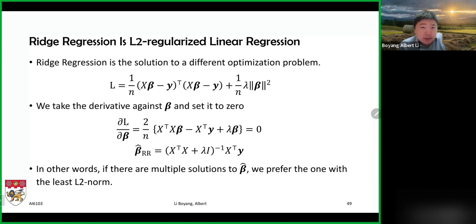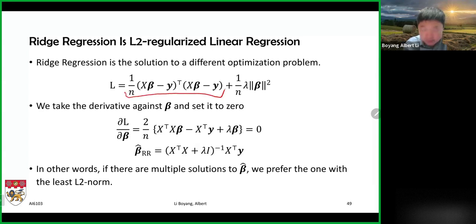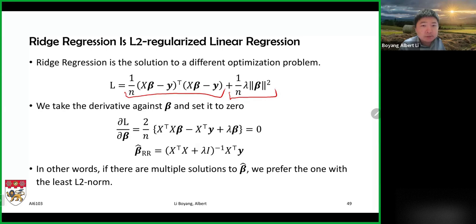Ridge regression is also a solution to an optimization problem slightly different from what we saw before. Previously we had the MSE loss, but now we add one more term: one over n times lambda times the norm of beta squared. To find the solution, we take the derivative with respect to beta and set it to zero.